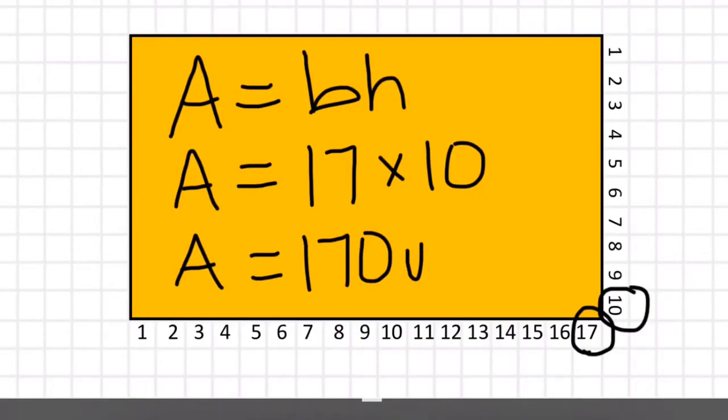Now we're going to use the rectangle formula to solve for the parallelogram formula. Keeping in mind that area is base times height. We identified the base here, 17, and the height is 10. So 17 times 10 gives us an area of 170 units squared.